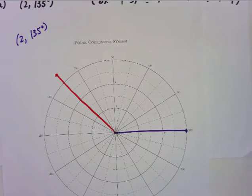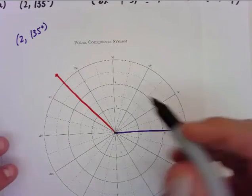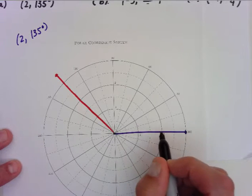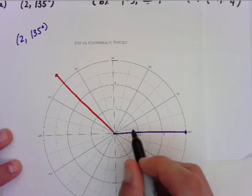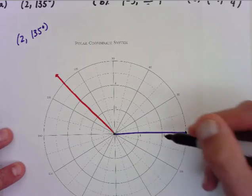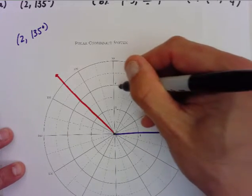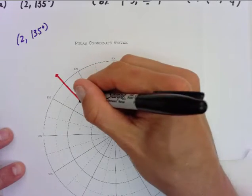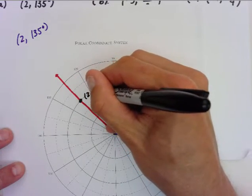Now, here's where we figure out where the point is going to be. My radius is 2, so notice you see the one radius, 1, 2. The dotted lines are halves, half circles. So, one radius, two radius. I found where the 2 is, I follow it around to my terminal side, and there it is. And there is the point (2, 135°) for you to see.